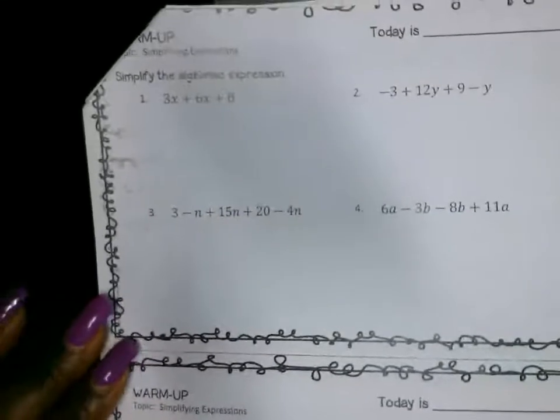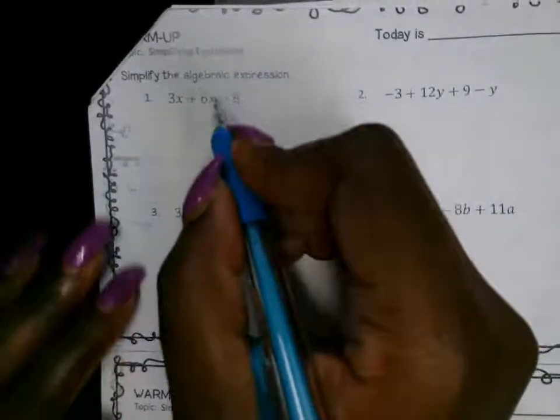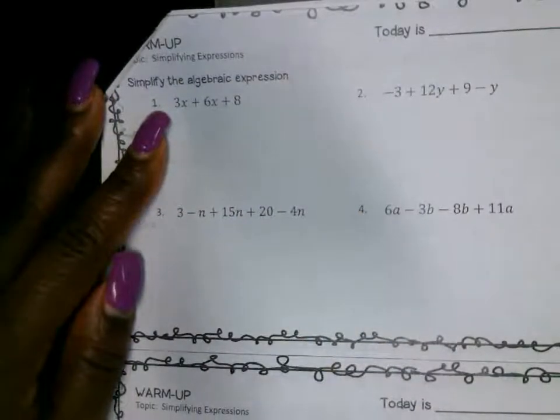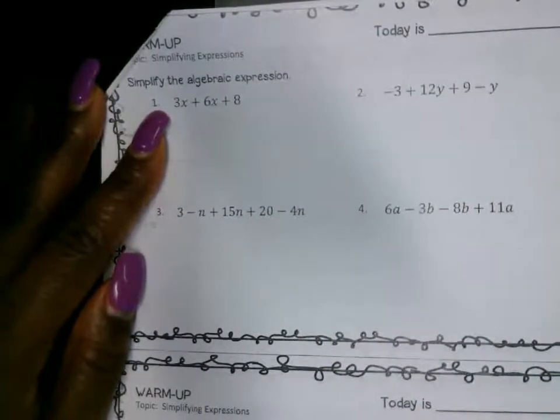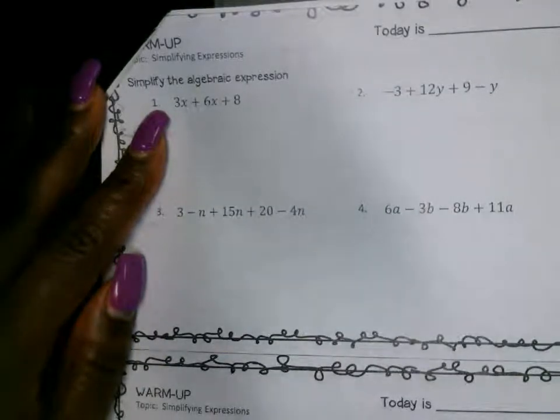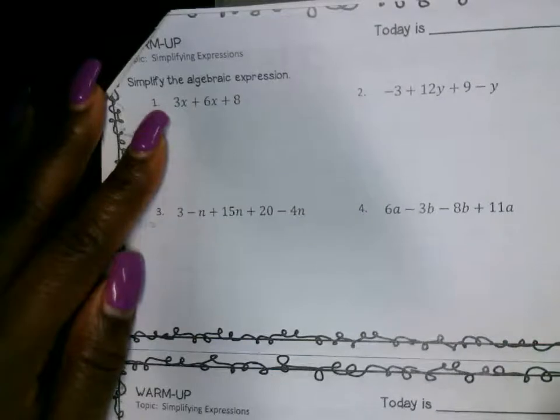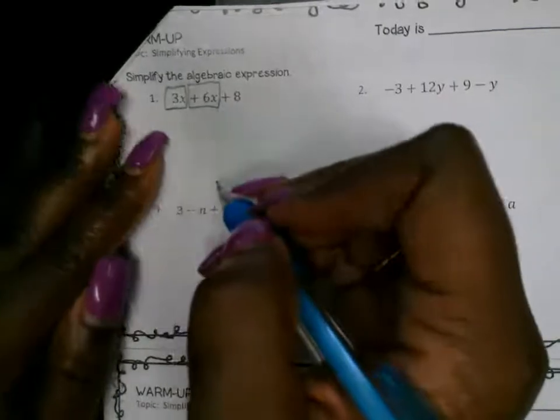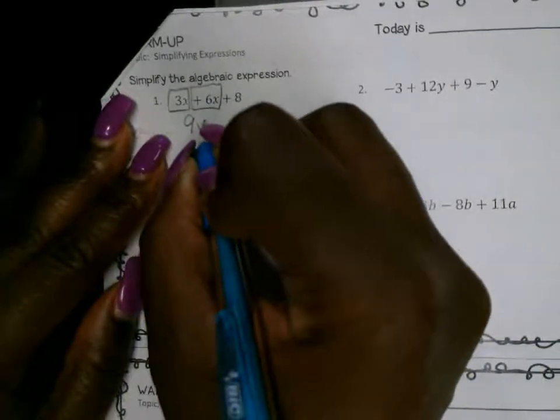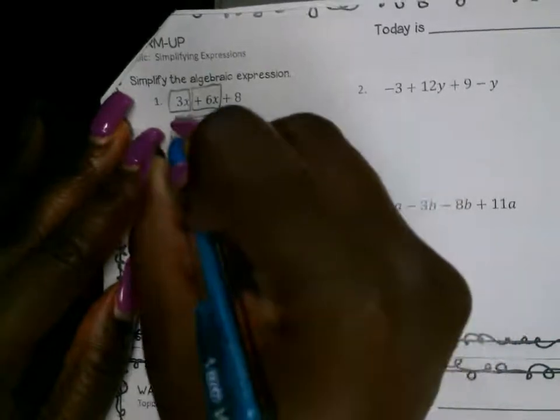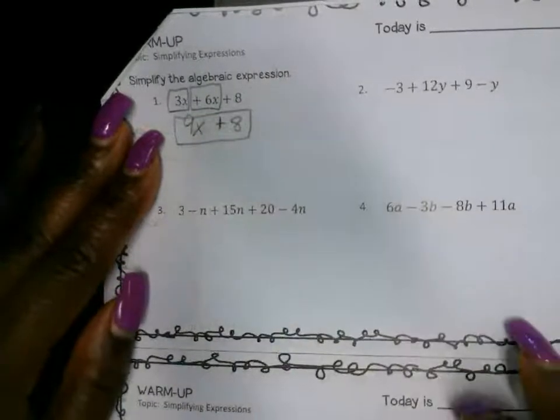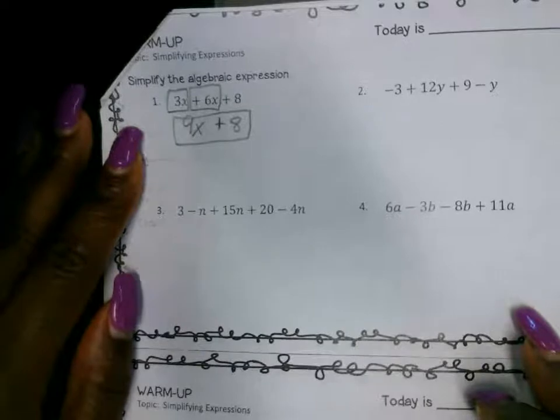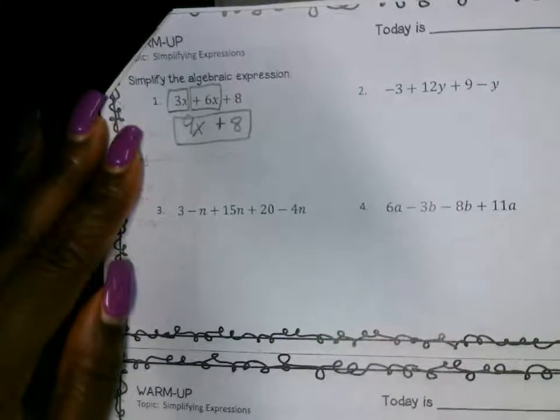We're going to combine like terms. Which terms here are like terms? We got 3x plus 6x plus 8. Which terms are alike? That means they have the same variables, set of variables attached, and the same exponents that are also attached to those variables. 3x plus 6x. What's 3x plus 6x? There are 9x's. And then we got plus 8. This is our answer. We cannot combine terms. We cannot add or subtract terms that are not alike. Raise your hand if you got that right.